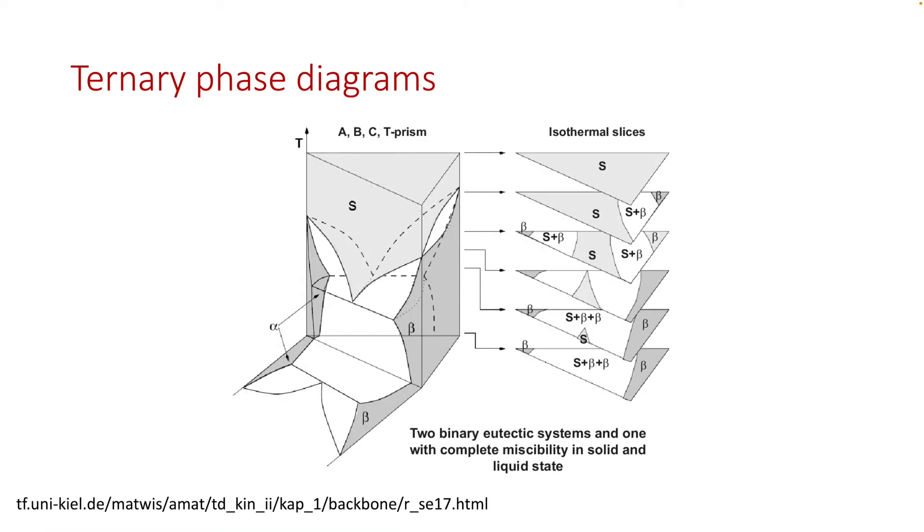There are different ways to look at ternary phase diagrams. You can fix the composition while varying the temperature. An extreme example is if you look at the side of the ternary phase diagram, it's actually a binary phase diagram. The three sides give you three binary phase diagrams.